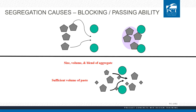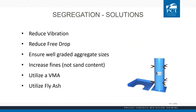To prevent segregation: reduce or eliminate vibration, reduce drop height, ensure well-graded aggregate, increase the fineness of material (not sand content), and utilize a VMA if needed. Fly ash, slag, and other SCMs will help reduce segregation — straight cement mixes are more prone to segregation than ones that incorporate an SCM.